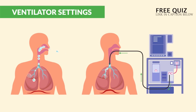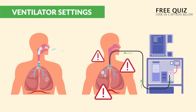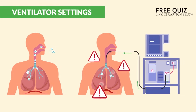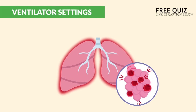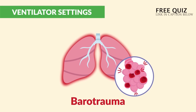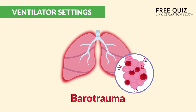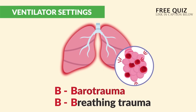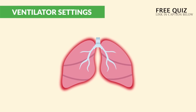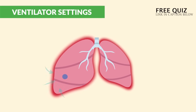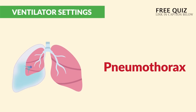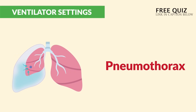PPV, or positive pressure, is a big danger — it can cause trauma in the lungs through overinflation. This trauma is called barotrauma, so just think 'breathing trauma.' That's damage to the lungs, and in severe cases it can even pop a lung if the pressure is high enough. This is called a pneumothorax.